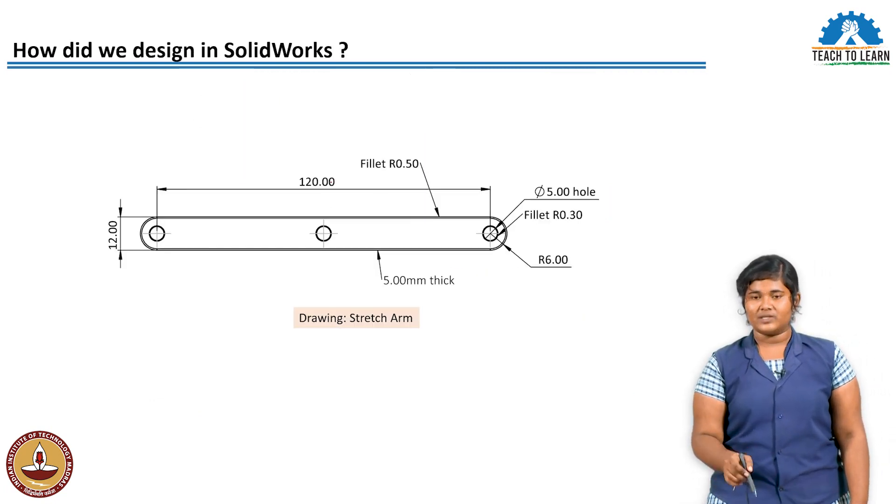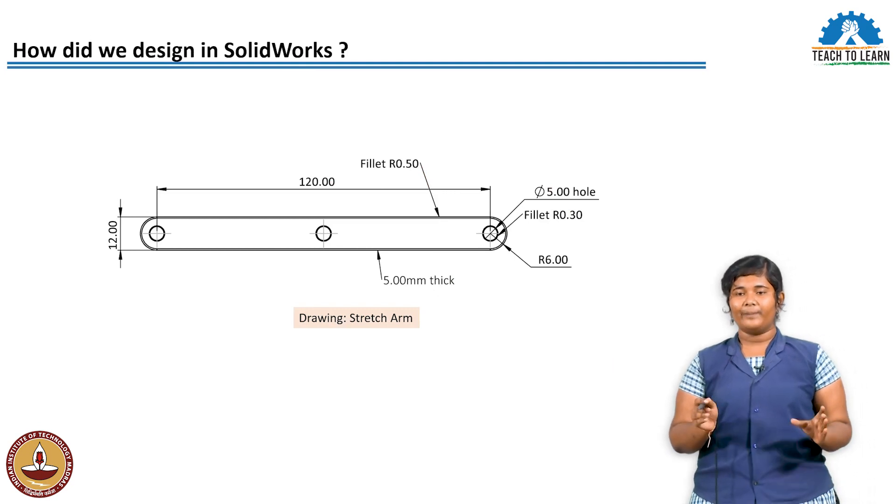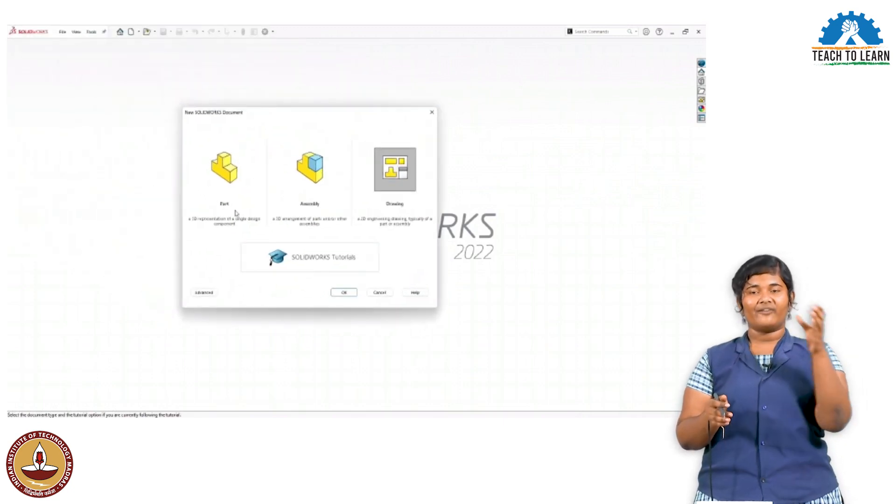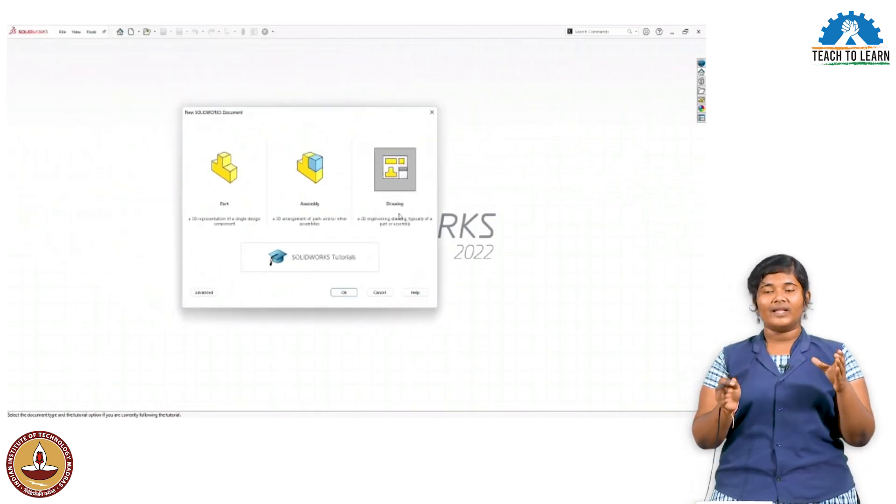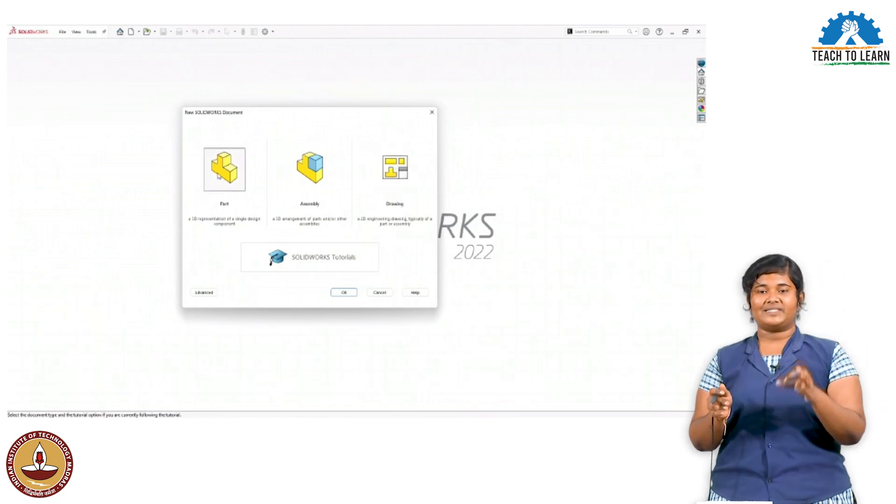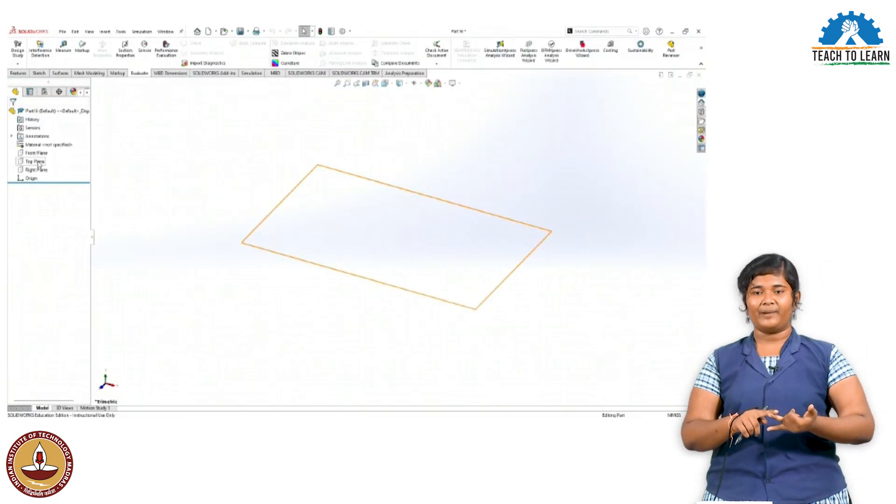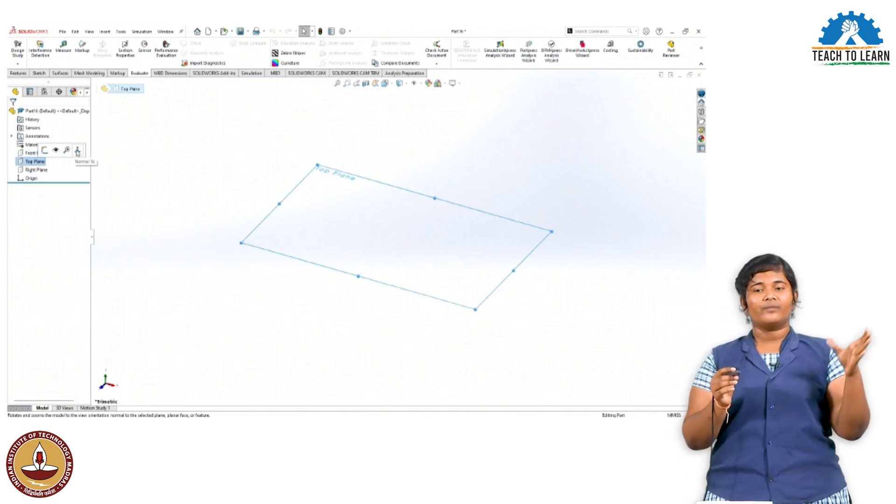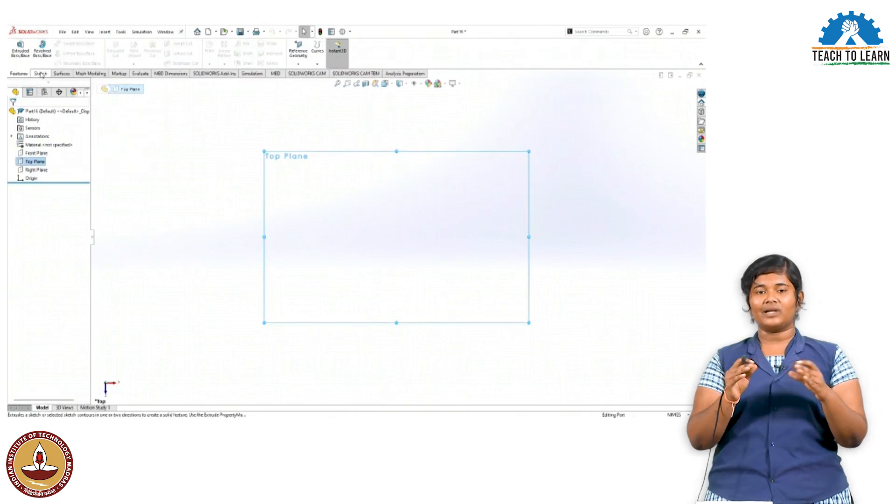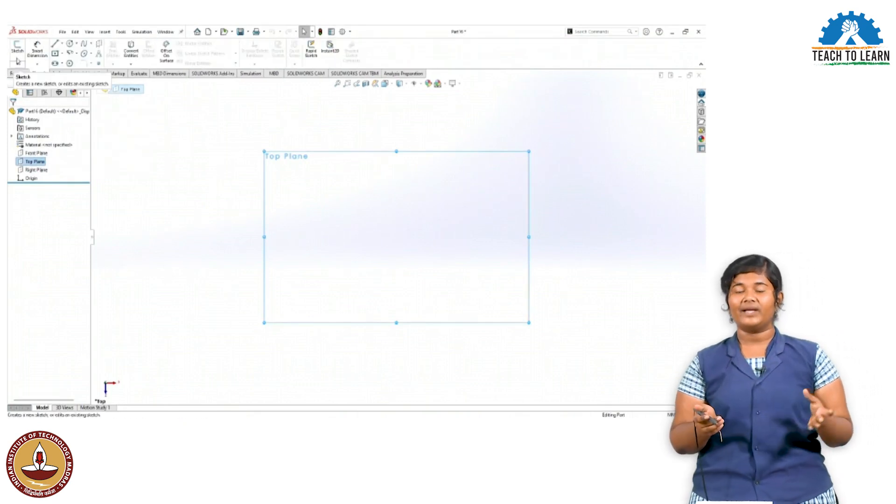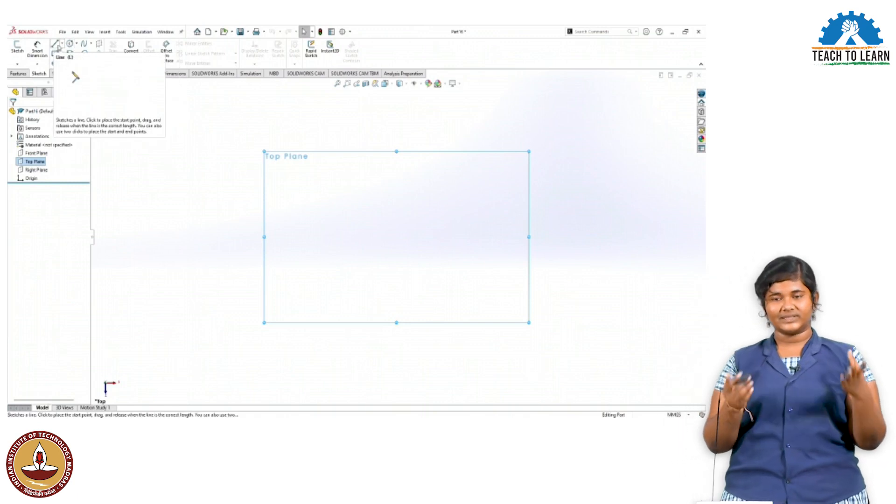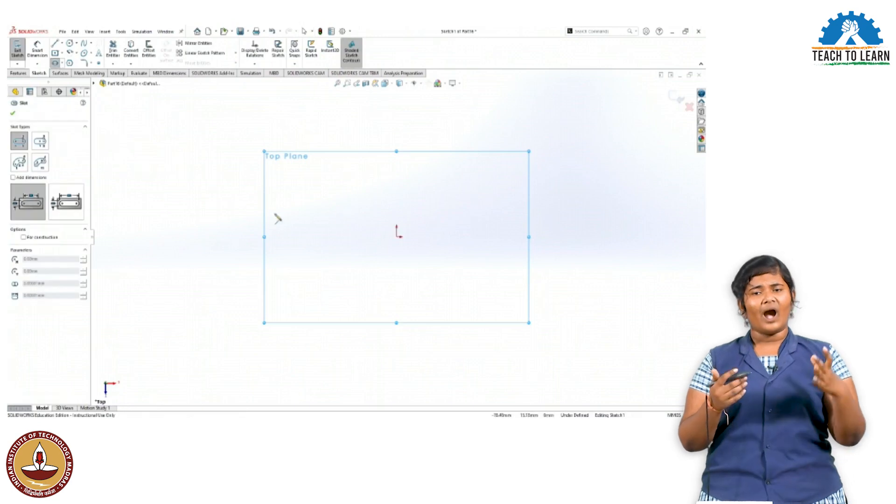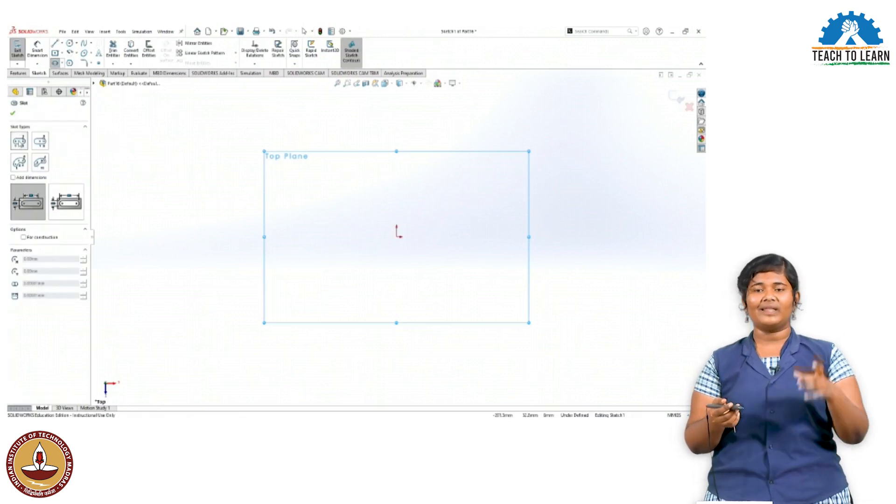Now let me show you how to design in SolidWorks. First, in the dialog box, choose the part option. Then the interface shows three planes: top plane, front plane, and right plane. I choose the top plane, right-click, and select normal view to get the top view. Then click the sketch option to access shapes. I choose the straight slot type.